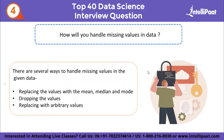How will you handle missing values in data? There are several ways. First, you can replace the values with mean, median, or mode — for example, if you have a numerical column like price with many missing values, you can replace them with the mean. Second, dropping the values: if a column has more than 70% null values, you can drop that column. Third, replacing with arbitrary values — choosing a random value without any particular system.